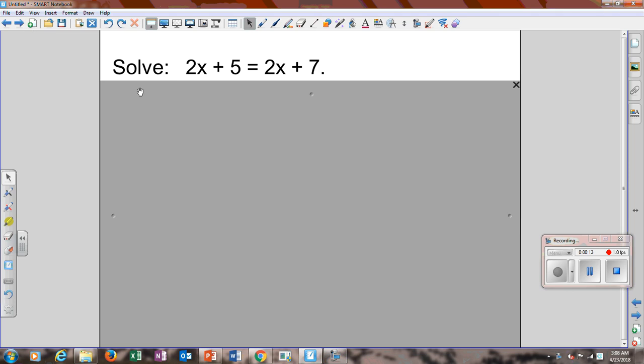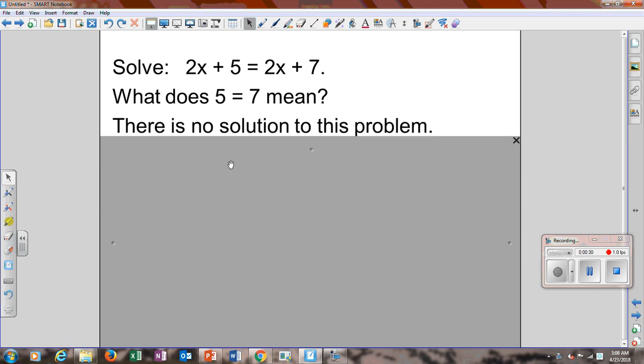So if you have 2x plus 5 equals 2x plus 7, how would you solve that? Well, you should say we subtract 2x from each side. It gives us 5 equals 7. When does 5 equal 7? Never. So there's no solution to that problem.